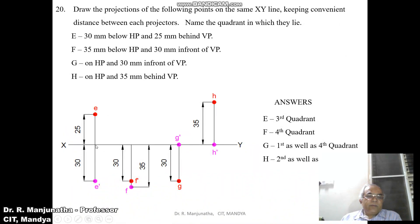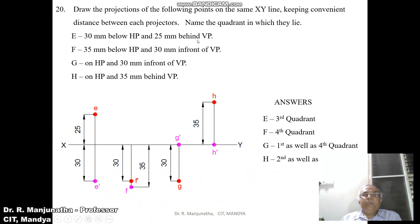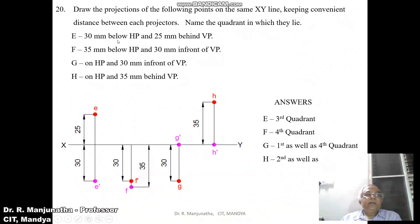Draw a vertical thin projector line and mark a point 30mm below the XY line. Since it is below HP, the image will be on the vertical plane, so you mark the point as a dash — that is E dash. For 25mm behind VP, behind VP always comes above the XY line, so measure 25mm above XY and mark this point as E. Since it is below HP and behind VP, point E lies in the third quadrant.